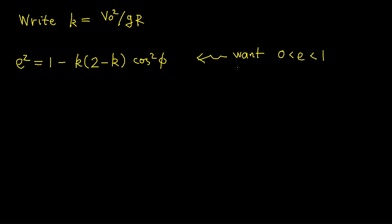Due to the nature of our application, we want e to be between 0 and 1. Otherwise the orbit would be a parabola or hyperbola, which are unbounded, meaning the projectile would never return to the planet. For this reason we assume k is between 0 and 2. This way e² = 1 minus something positive, so e² < 1 and e is between 0 and 1.